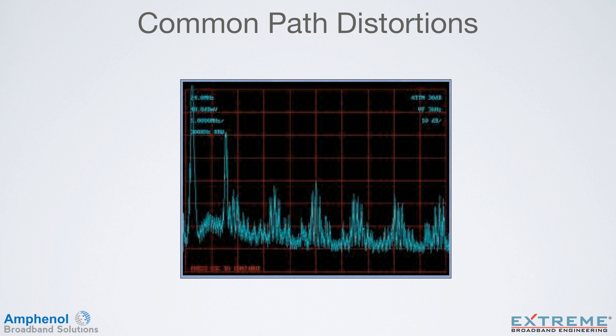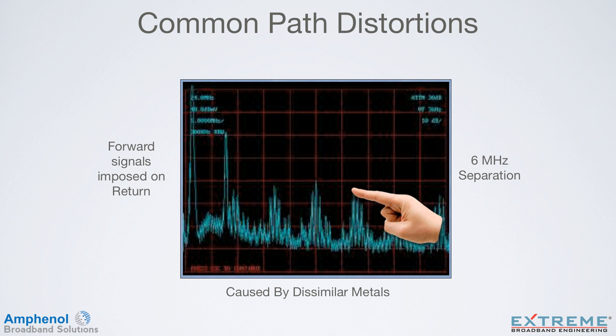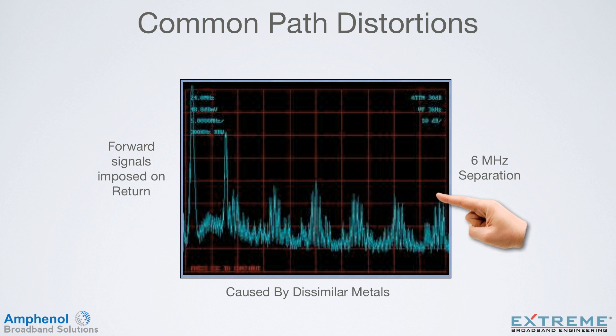Common path distortion can develop at any point where the forward and return signals are present, and there's a contact point such as between a center conductor and a passive port contact. Normally this point of contact will not create common path distortion, but if the platings are scraped to the base metals, corrosion can develop due to dissimilar metals causing a diode effect, with the forward signals getting imposed on the return. Here's a spectrum analyzer sweep of the return band showing the common path distortion, identified by the peaks at 6 MHz spacings. This corrosion is very fragile — if you remove the center conductor, common path distortion would disappear, but it will return as the corrosion builds back up.